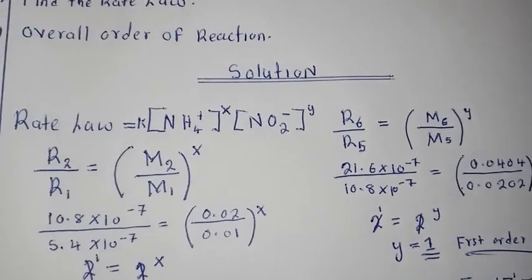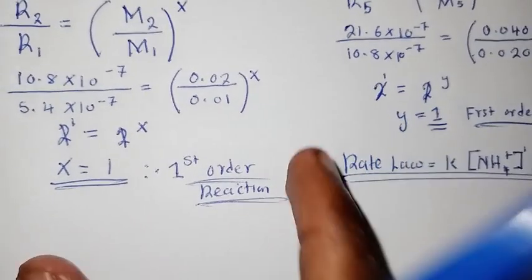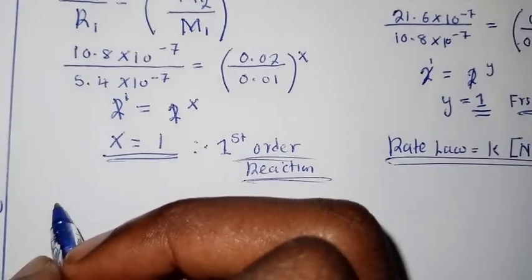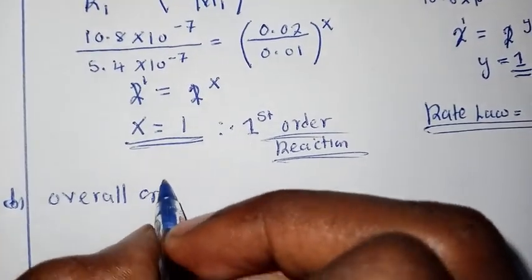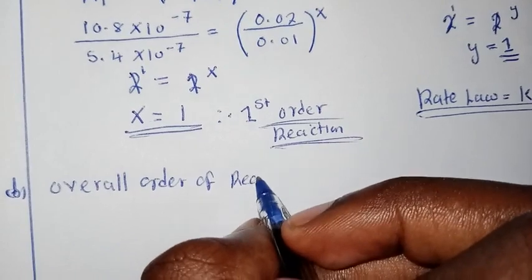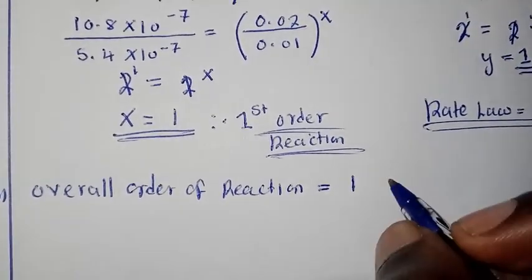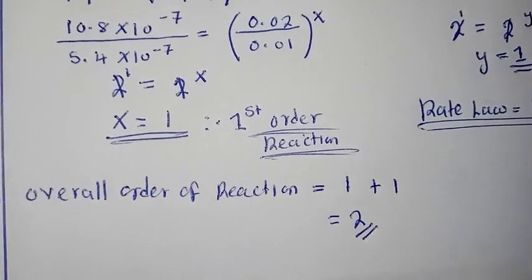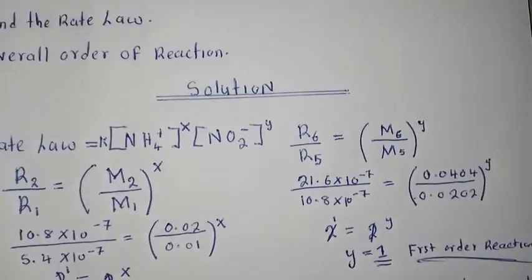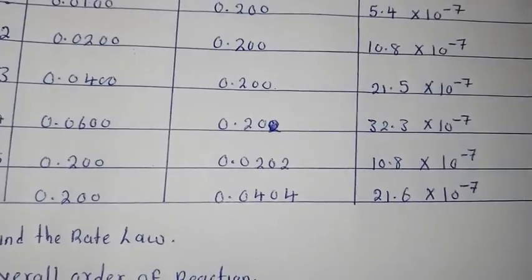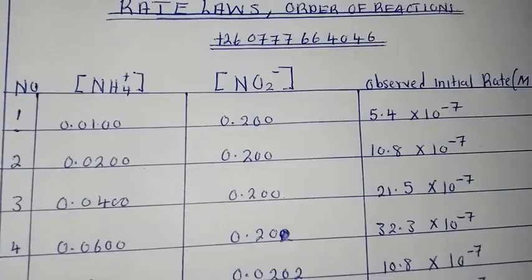Now for part B, we find the overall order of reaction. The overall order of reaction is simply the sum of all the individual reaction orders. So the overall order equals 1 plus 1, which gives us 2. That is the overall order of reaction for this question. It's a very simple question — make sure you understand so that you'll be able to solve almost any question under this topic. Thank you so much.